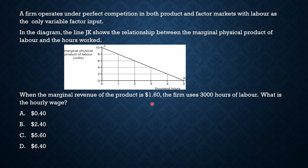So 4 multiplied by $1.60 gives $6.40 — that is the hourly wage rate, which is option D. It is a very simple question if you know the formula: marginal revenue product equals marginal physical product multiplied by marginal revenue. At 3,000 employees the marginal physical product is 4, so 1.60 multiplied by 4 equals $6.40. Option D is the right answer.